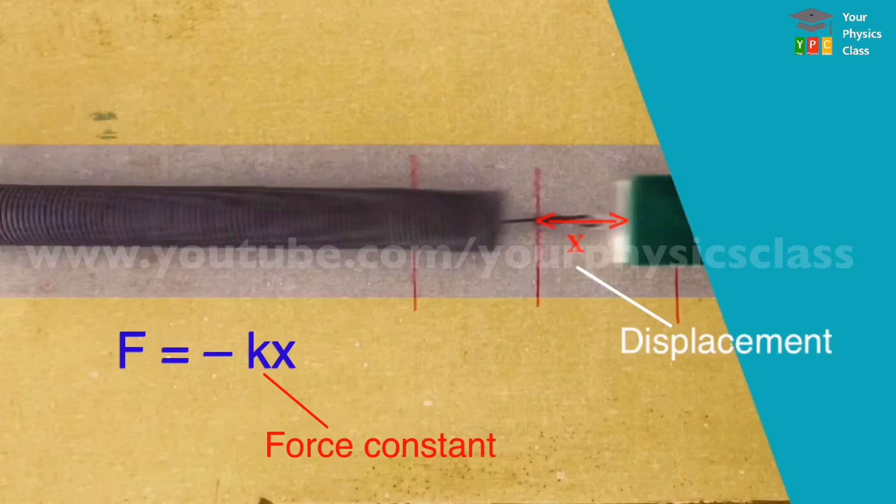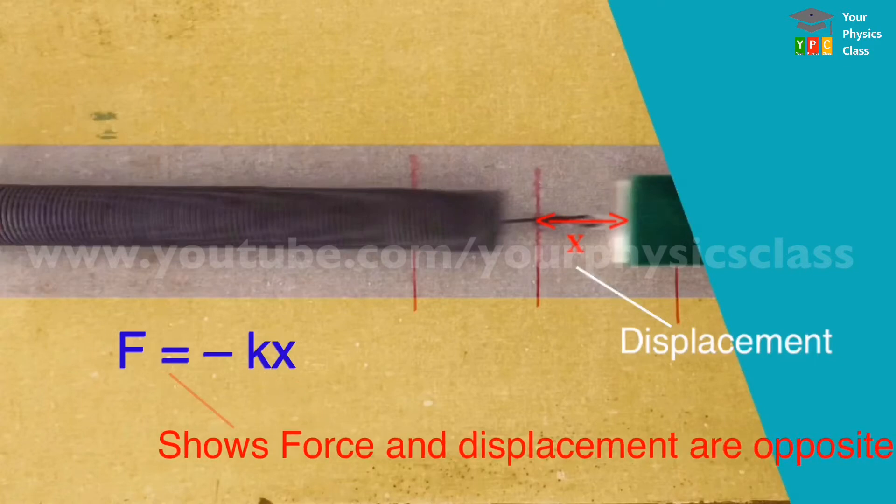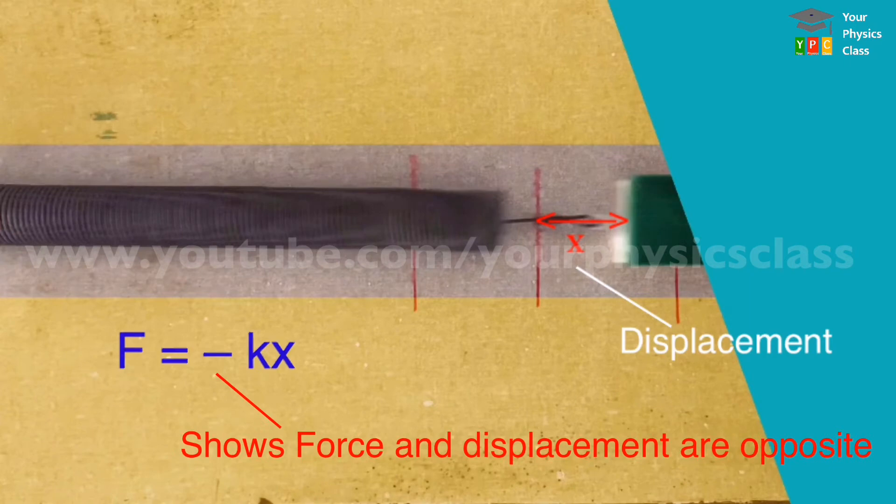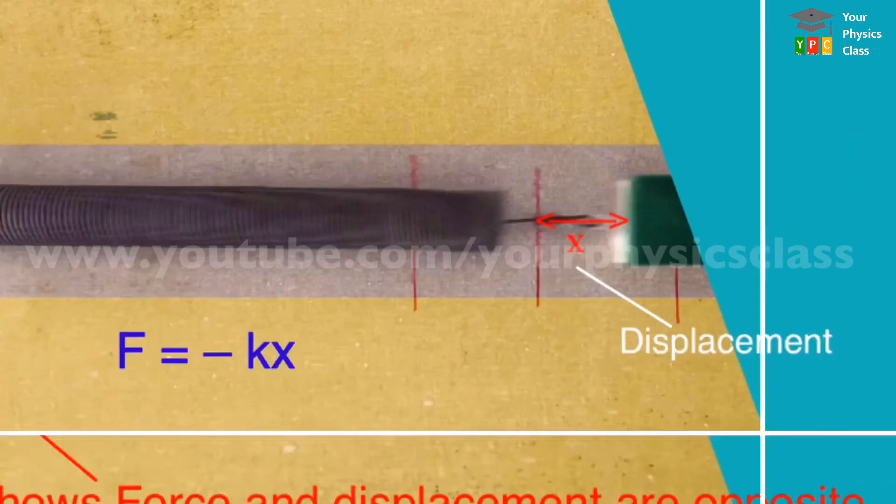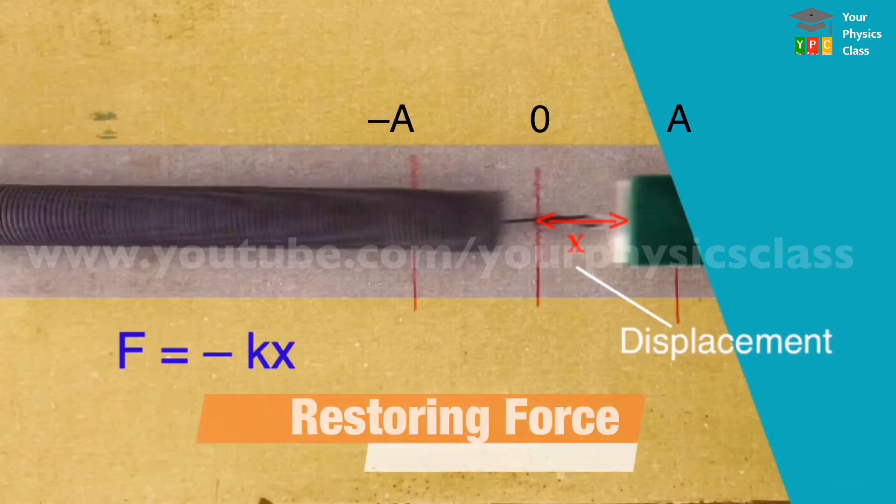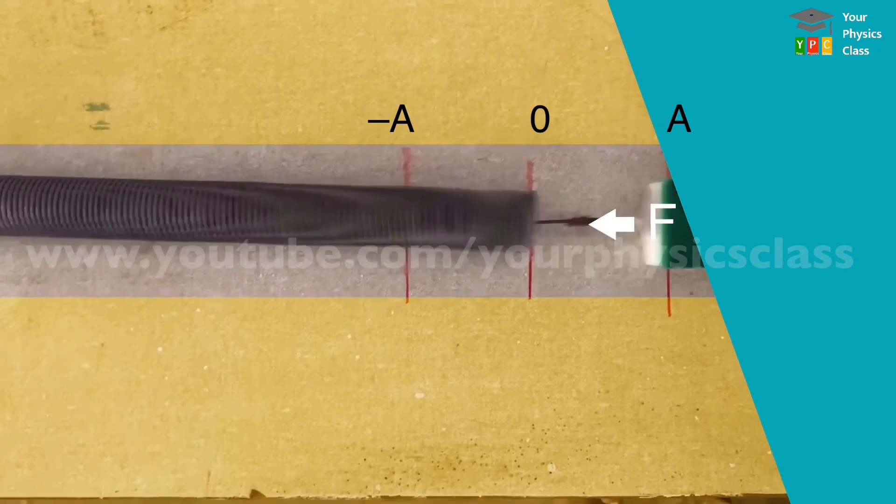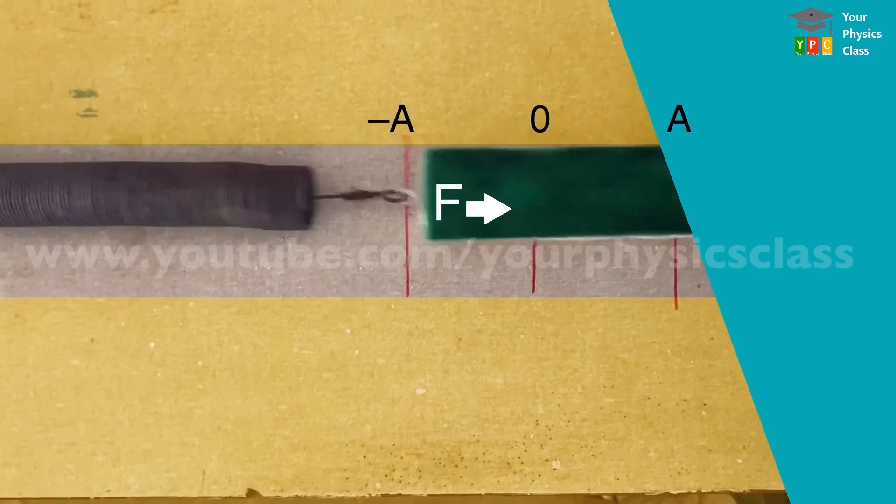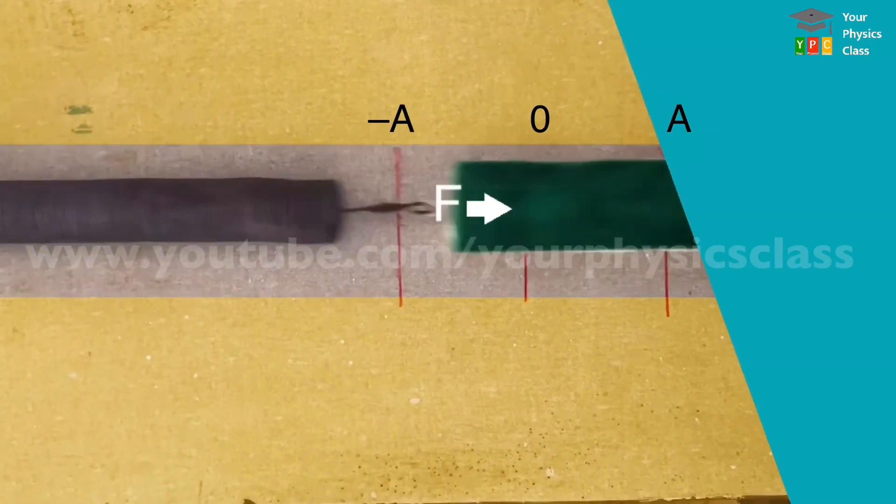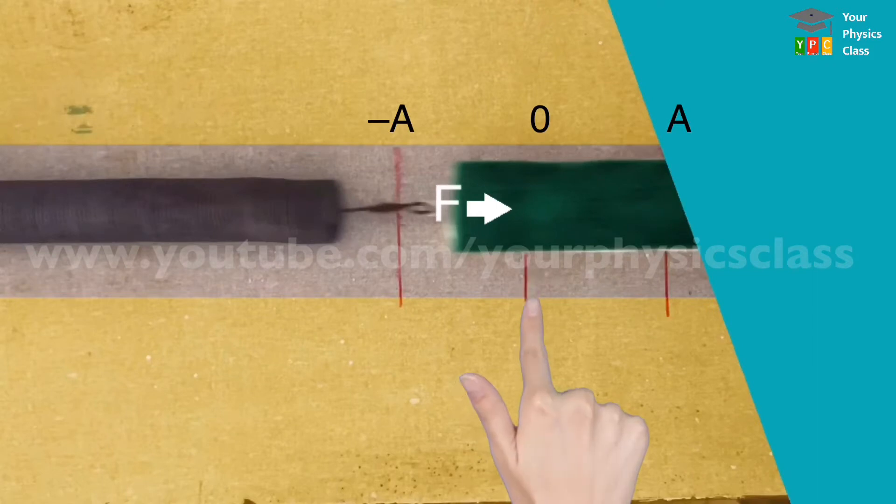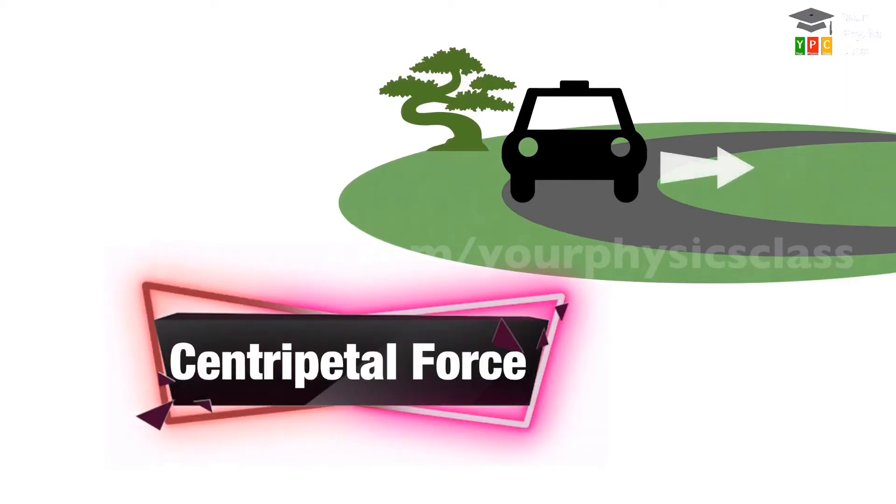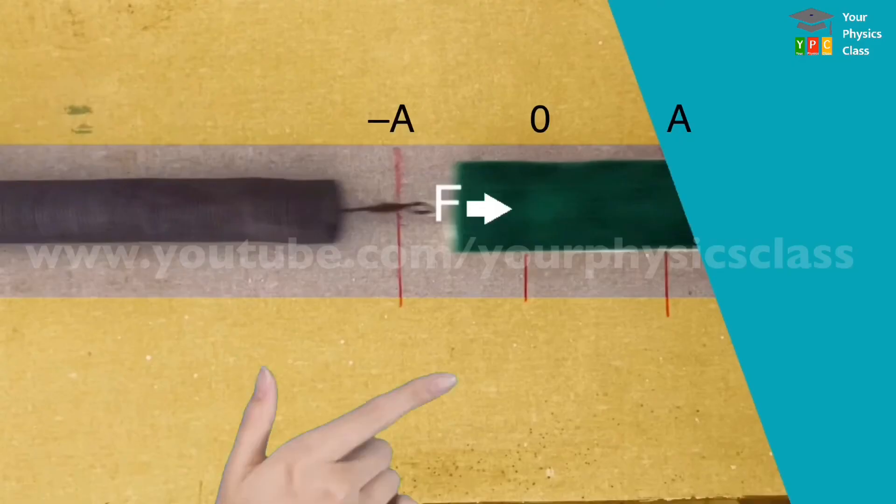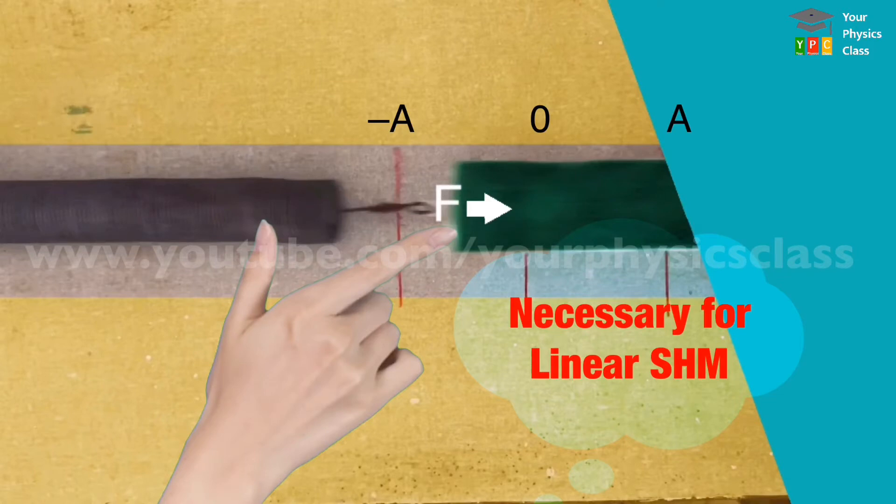Its value depends on elastic properties of the spring. And negative sign shows that force and displacement are oppositely directed. Negative sign also shows that this force is a restoring force. It tries to restore the body back to its equilibrium position. This force is a requirement of linear simple harmonic motion and is always directed towards the mean position. As we have seen in circular motion, centripetal force is a necessary condition for circular motion. Similarly, this restoring force is necessary for linear simple harmonic motion.